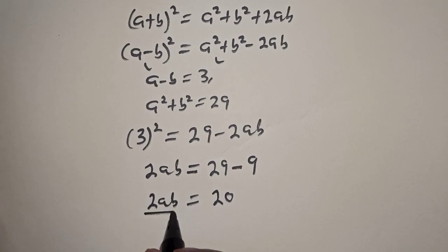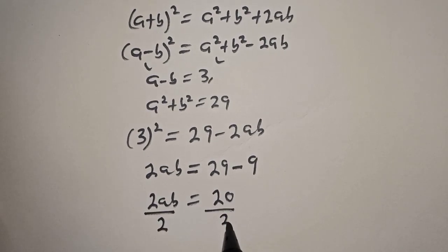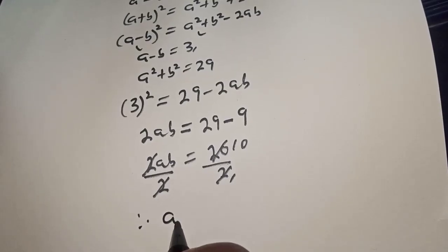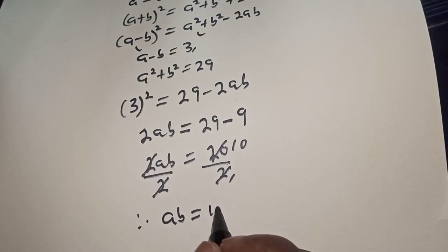Then let's divide both sides by 2. This one will cancel this. Therefore, AB is equal to 10.